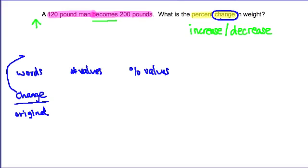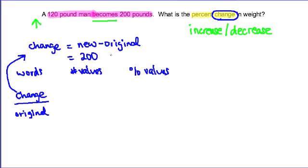To find the amount of change, we need to understand how to calculate it. Change is calculated as the new amount minus the original amount. So that's going to be 200 pounds minus 120, which gives us a change of 80. Notice that it's positive 80, and that makes sense because this is an increase, and an increase is positive.